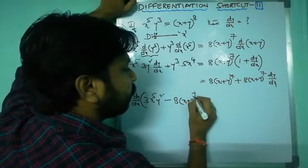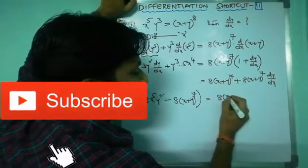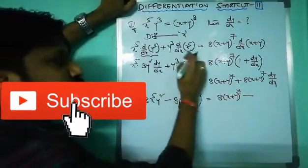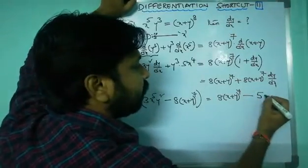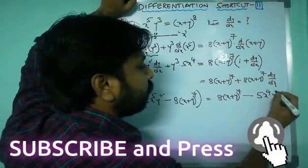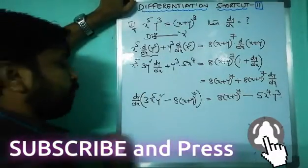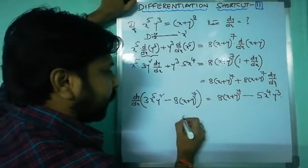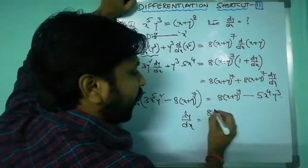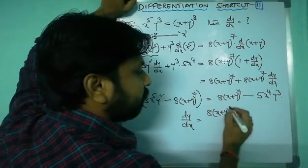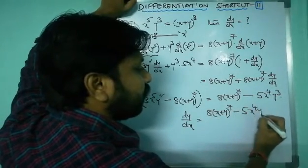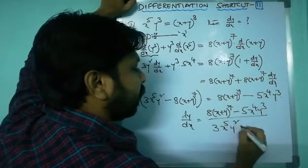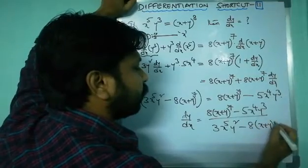Continuing: dy/dx times (3x^5 y^2 minus 8(x+y)^7) equals 8(x+y)^7 minus 5x^4 y^3. So dy/dx equals [8(x+y)^7 minus 5x^4 y^3] divided by [3x^5 y^2 minus 8(x+y)^7].